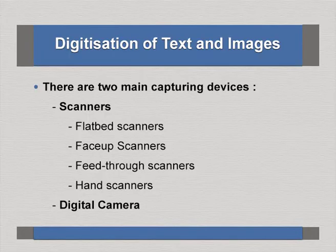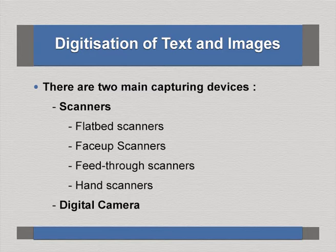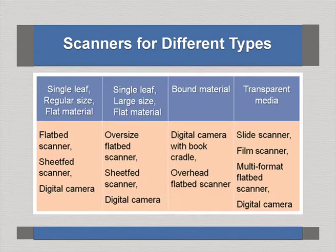For digitization of text and images, there are two main capturing devices: scanners and digital cameras. Scanners come in different types — flatbed scanners, face scanners, feed-through scanners, and hand scanners — meaning they come in different sizes and forms. Digital cameras are also an option.